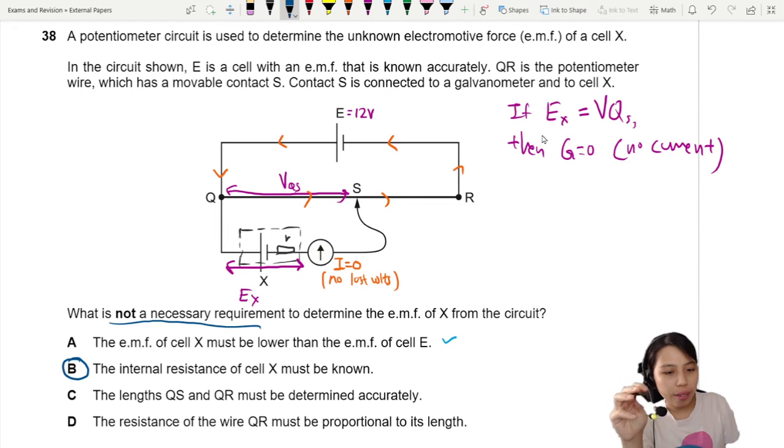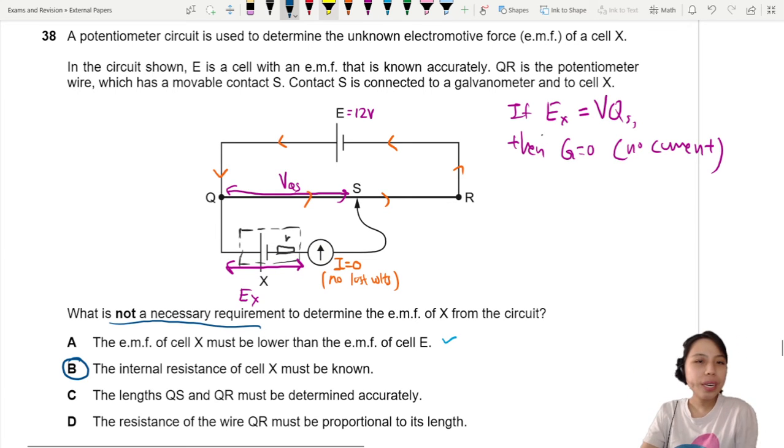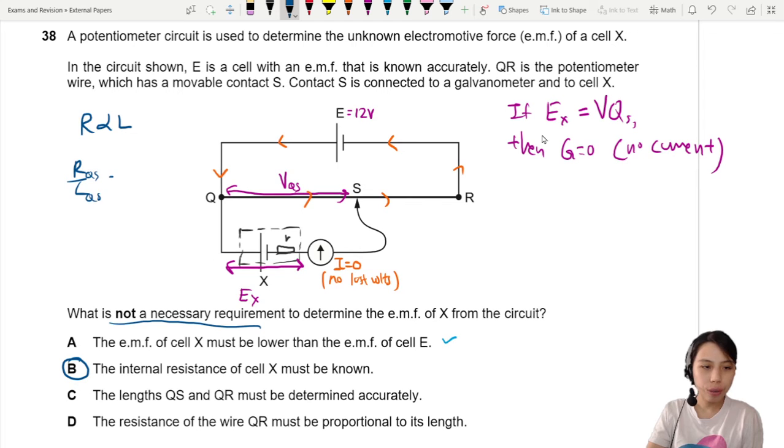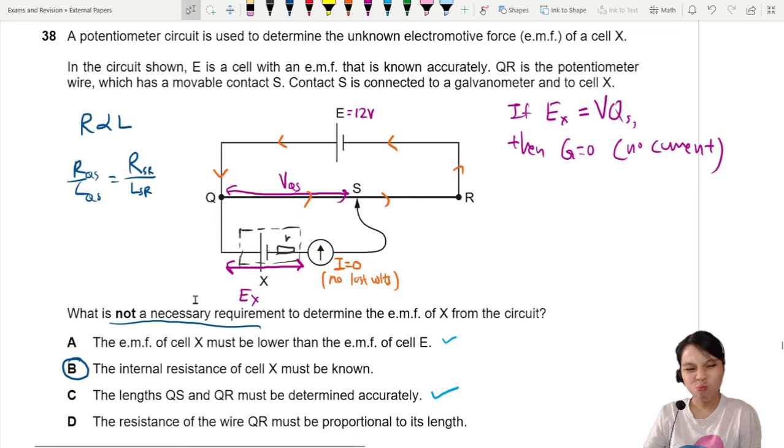C says the lengths QS and QR must be determined accurately. Do we need that? We just need to know their resistance. The length, if we know the length, that's great, because then from there we can know the resistance and do a ratio of R over L. RQS over LQS, RSR against LSR. That will be ratioing these two sides. But even if we did not know the length, if we know the potential, we know the resistance, we could still get by. So we kind of need the stuff. We could get by, but we can't really go far because we still need to do this ratio of length. So we need the stuff.